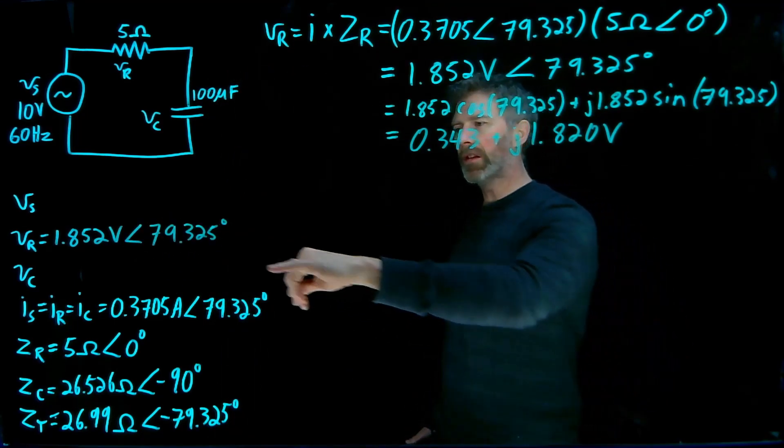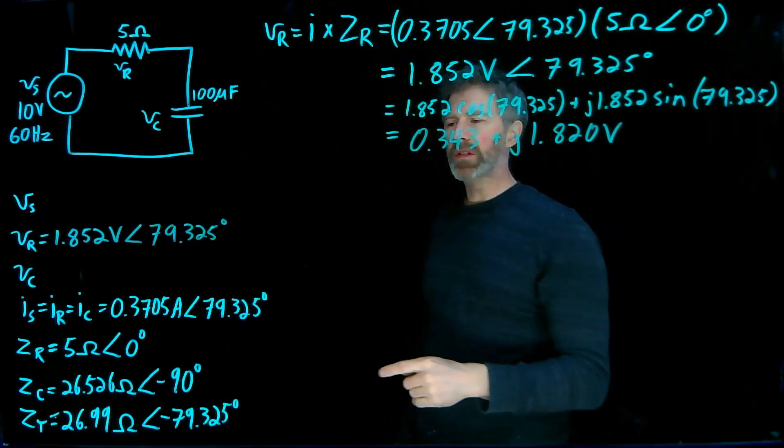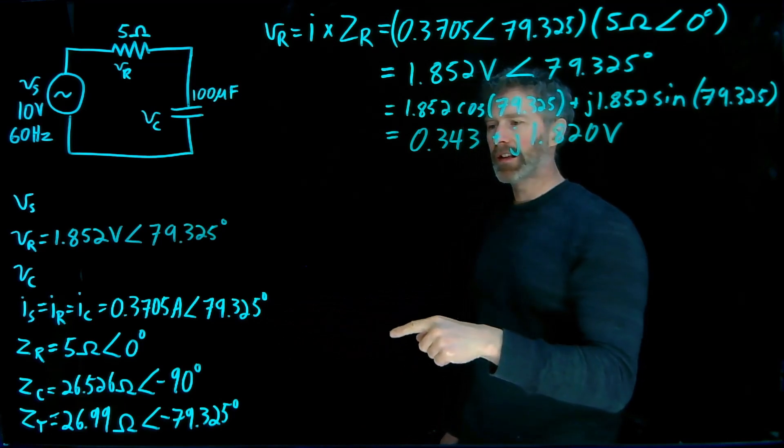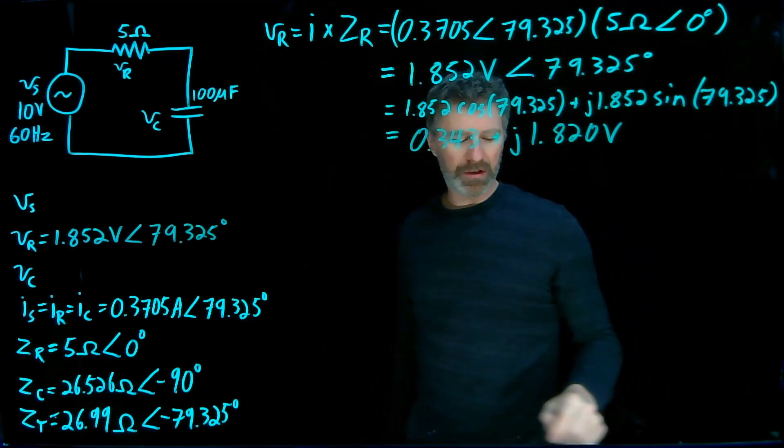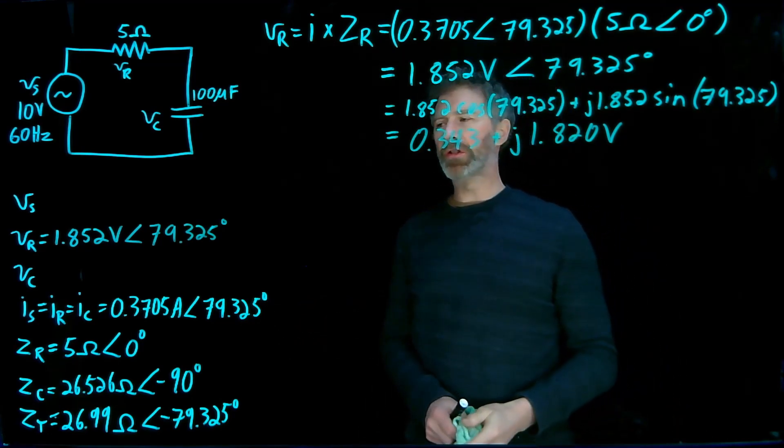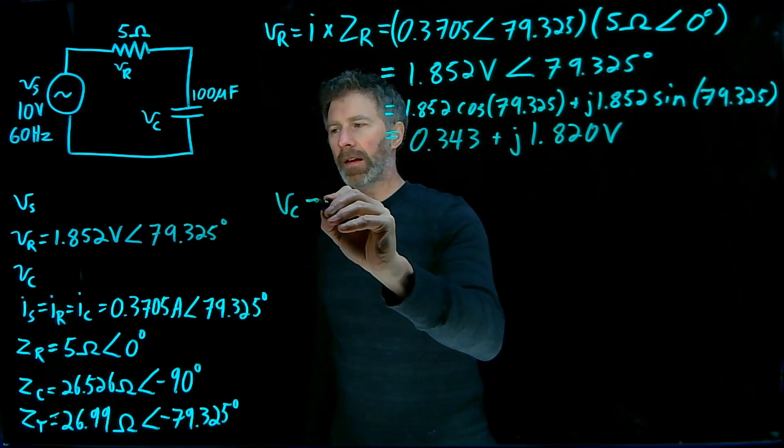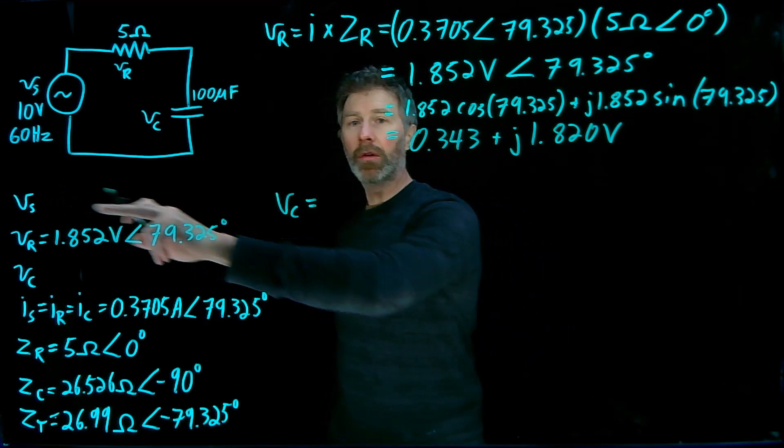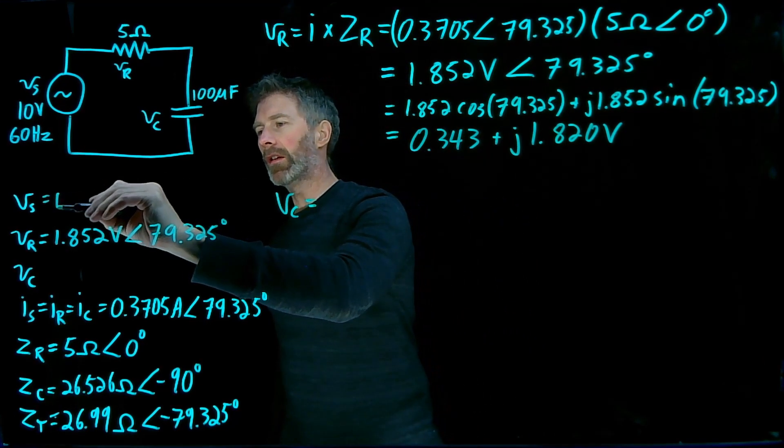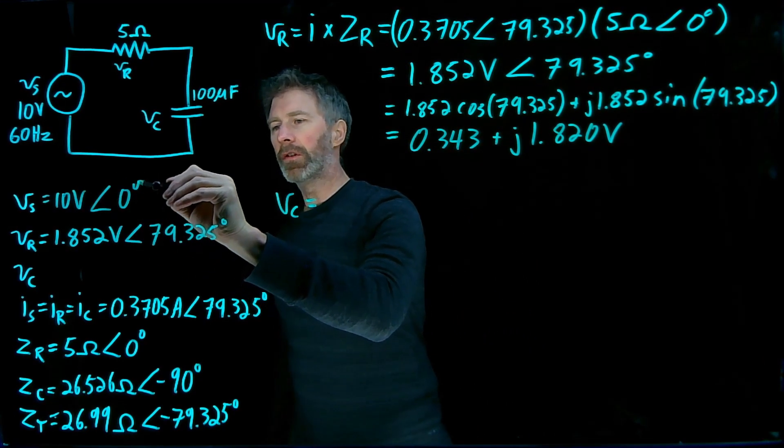Now let's move this number over to my table here. As expected, the phase angle of the voltage across the resistor is same as the phase angle of the current through the resistor. There is no phase shift between voltage and current in a resistor. Let's do the voltage across the capacitor next. I think that's the last thing we need to figure out, because we actually know what the source voltage is, that's 10 volts angle zero degrees.